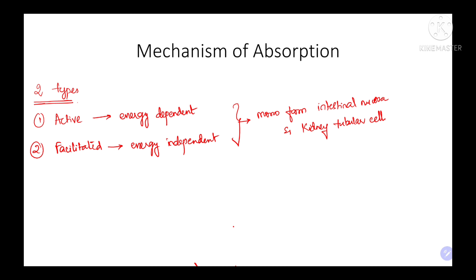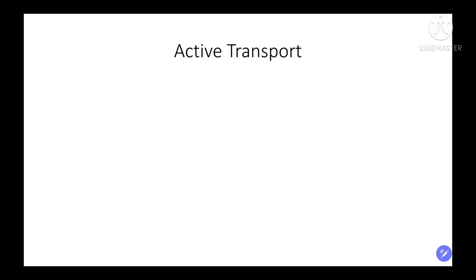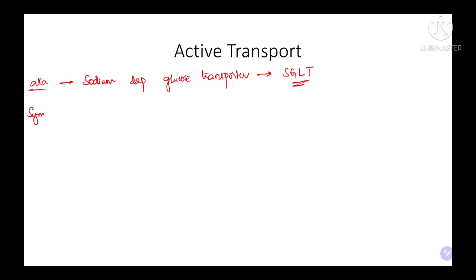Facilitated transport is mainly required for the transport of glucose or monosaccharides from the intestinal mucosa to the blood and to various body cells. Active transport uses sodium-dependent glucose transporters, otherwise called SGLT. This is a type of symport mechanism, meaning both sodium and glucose enter into the intestinal mucosa in the same direction.